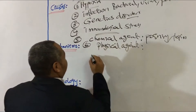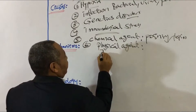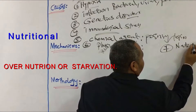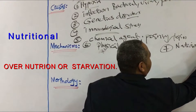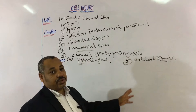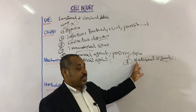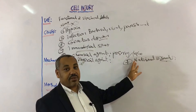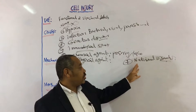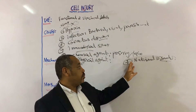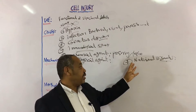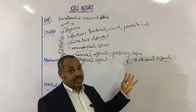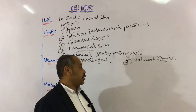Number seven is nutritional disorders. This means lack of specific nutrition, like malnutrition and starvation — kwashiorkor, marasmus, and so on — or overload, such as vitamin overload or obesity. So nutritional imbalance, whether increased or decreased intake, can be a cause of cell stress.